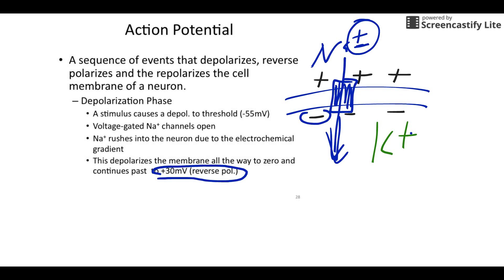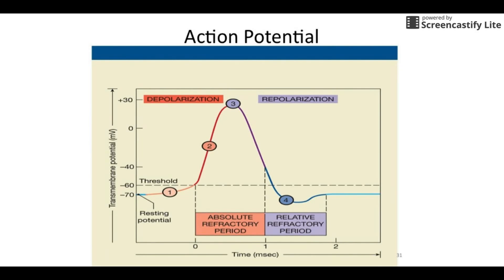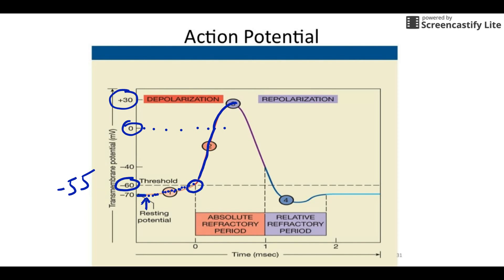Let me skip ahead a couple slides. So this is what we've been at so far. It was negative 70 at resting potential. We get some sort of a stimulus and we lose charge, we start moving towards zero — that's depolarization. Once we hit threshold — we're using negative 55 as our number — that's when the sodium doors open and sodium comes rushing in. It hits zero, then more sodium comes in, and the inside becomes positive — positive 30, that's the reverse polarization.